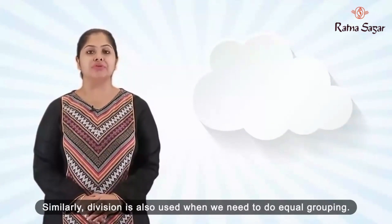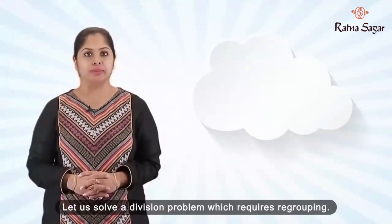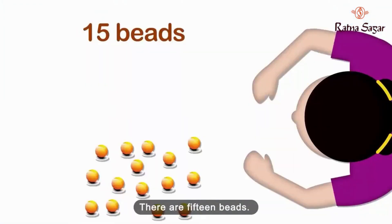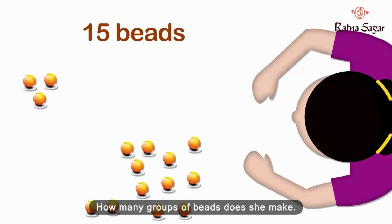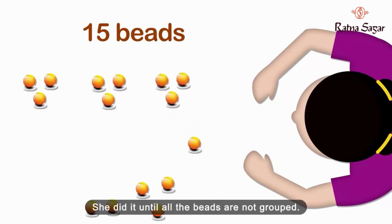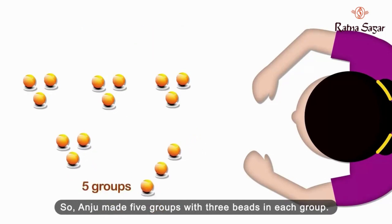Similarly, division is also used when we need to do equal grouping. Let us solve a division problem which requires grouping. There are 15 beads. Anju makes equal groups with 3 beads in each group. How many groups of beads does she make? Anju takes 3 beads and puts them together, and she does it until all the beads are grouped. So Anju made 5 groups with 3 beads in each group.